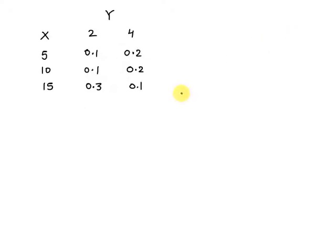Hello students. In this question we have given the joint probability distribution function for the random variables X and Y. By using this we have to find the value of the covariance between the random variables.